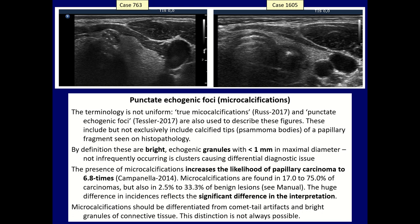These forms of echogenic figures are found in a wide range depending on the interpretation of the authors and can also be found in benign lesions with much less frequency. The huge difference in incidences reflects the significant difference in interpretation. Microcalcifications should be differentiated from other types of granular hyperechoic bright forms, mainly from comet tail artifacts, connective tissue, and also from the granular form of backwall cystic figures.